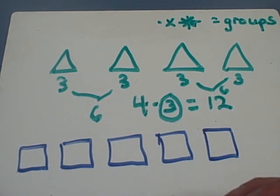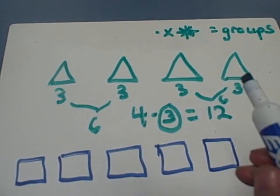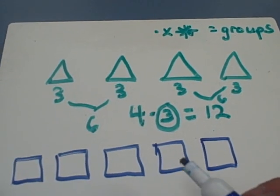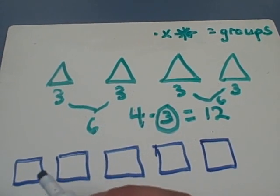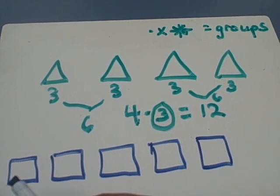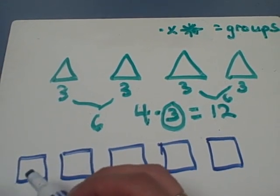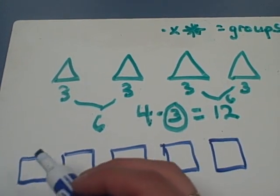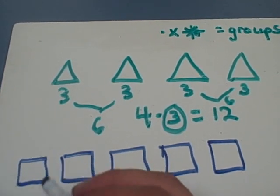Now let's write a multiplication equation for this picture. Let's use corners this time, actually. Let's count the corners: one, two, three, four. Four corners in a square.